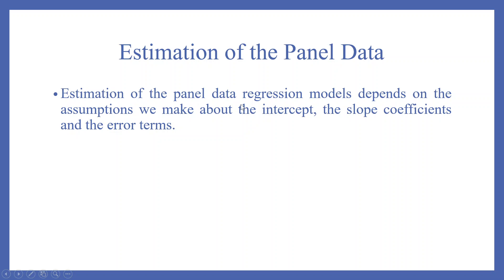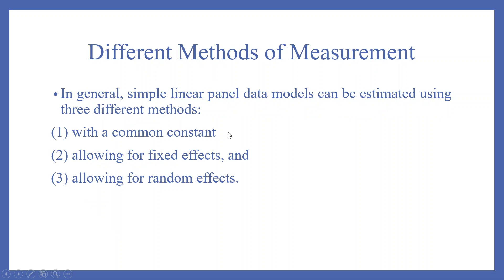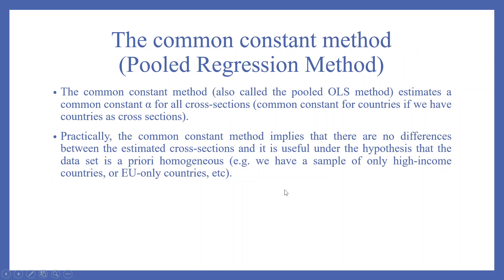Estimation of the panel data regression model depends on the assumptions we make about the intercept, the slope coefficients, and the error terms. In general, simple linear panel data models can be estimated using three different methods: 1. With a common constant, 2. Allowing for fixed effects, 3. Allowing for random effects.